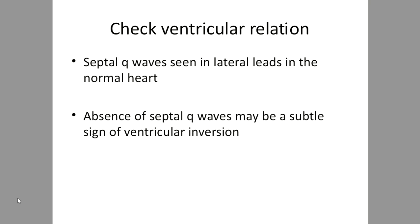After confirming situs solitus and levocardia, check whether the ventricular loop is a D-loop or L-loop. Septal Q waves seen in lateral leads V5 and V6 correlate with normal ventricular location with LV apex, whereas absence of septal Q-waves may be a subtle sign of ventricular inversion.